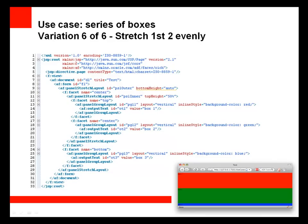Another variation is to stretch the first two boxes evenly using nested panel stretch layout components. Within one panel stretch layout we have a center facet and a bottom facet for the blue box. Within that center facet, we provide a second panel stretch layout with a top height of 50%, and the remainder is applied to the center facet for the green box. This approach works with the components intelligently rather than forcing them with 100% width or height, which can be unreliable across browsers.